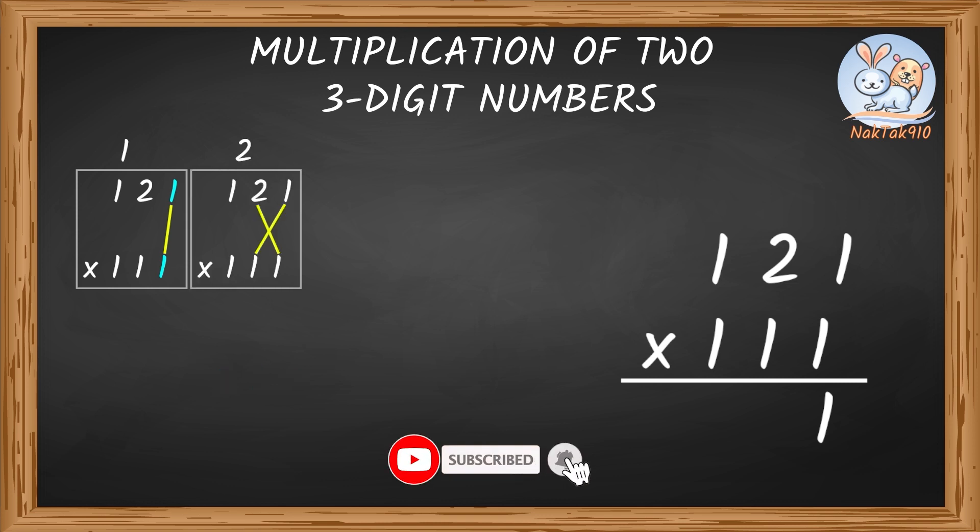Step 2. Now cross-multiply. Multiply 1 times 1 and 2 times 1 and add these two products. So, 1 plus 2 equals 3. Now write this answer.